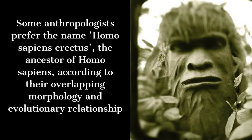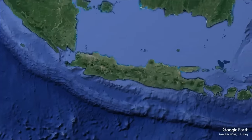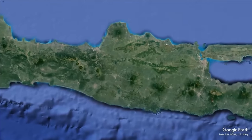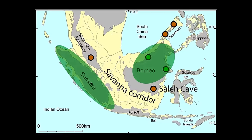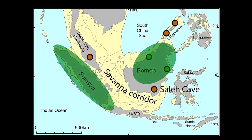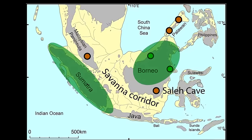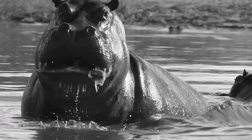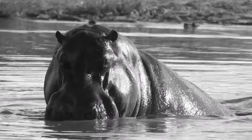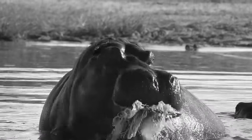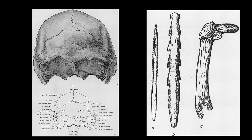Homo erectus first appeared on the Indonesian island of Java at least 1.8 million years ago, when Java was connected to Asia by a land bridge. This date has far-reaching implications for our understanding of the first out-of-Africa human migrations. The migration of Homo erectus in Southeast Asia during the early Pleistocene is critical to understanding human evolution. Homo erectus inhabited an open woodland environment much cooler than present-day Java, alongside elephants, tigers, wild cattle, water buffalo, tapirs, and hippopotamuses, among other megafauna.